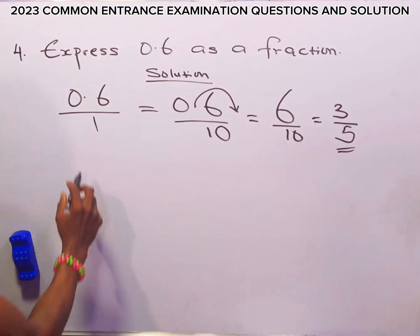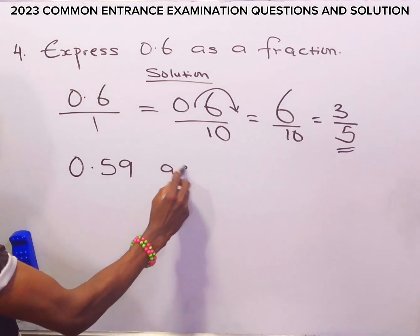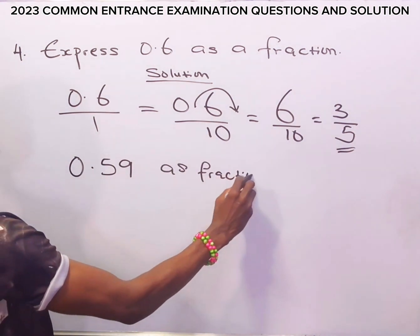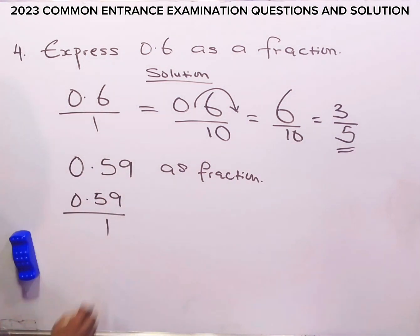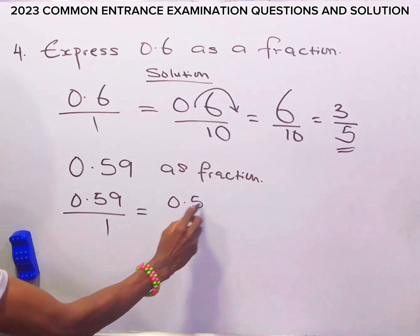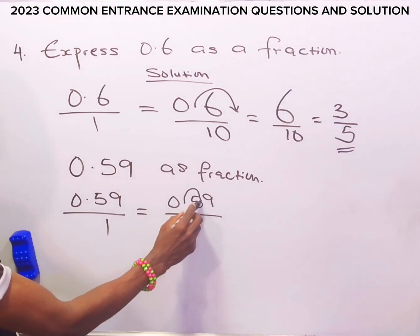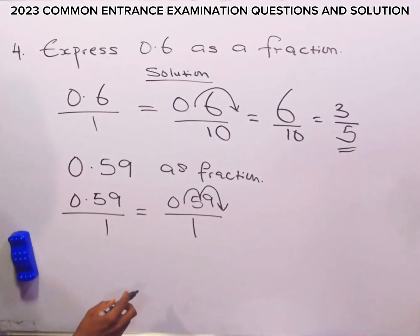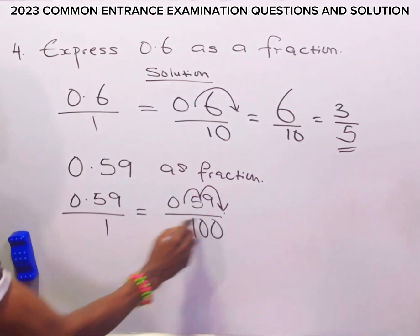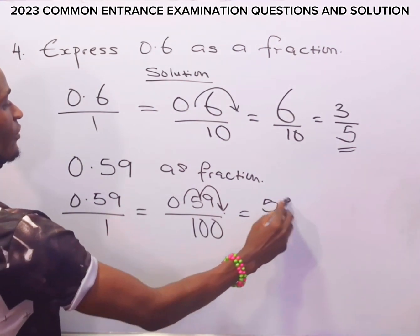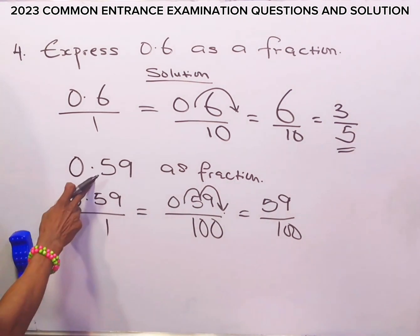Also, if we have 0.59 as a fraction, we can express this as a fraction by saying 0.59 over 1. Then we also say 0.59 over 1 again. Now, we move our decimal place this time twice: 1, 2. So that we don't have a decimal point anymore before or in between the number. Then we add double zeros to the denominator. So that we have it as 59 over 100. This is how to change decimal numbers to fractions.